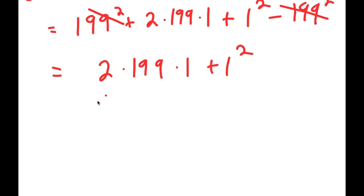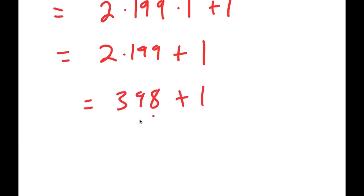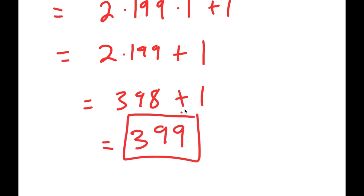And now this is equal to — you can cancel these two 199 squared terms — 2 times 199 times 1 plus 1 squared. And 2 times 199 times 1 is the same thing as 2 times 199, and 1 squared is the same thing as 1. So I have 2 times 199, which is going to equal 398. And I have this plus 1, which is equal to 399. So my answer is 399. And that was method 1.